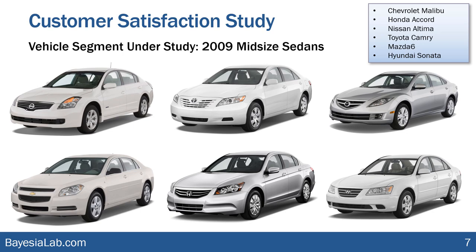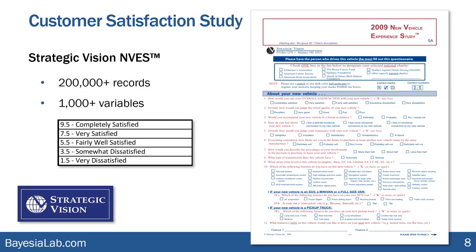All the data referenced here comes from the New Vehicle Experience Survey, which is regularly conducted by Strategic Vision. If you've ever purchased a new vehicle, you've probably received one of those surveys. They are very comprehensive — with lots of respondents and lots of questions: a total of a thousand variables, some derived from the VIN number, others about lifestyle, demographics, and psychographics. What we're interested in today are the questions about vehicle attributes and overall satisfaction.